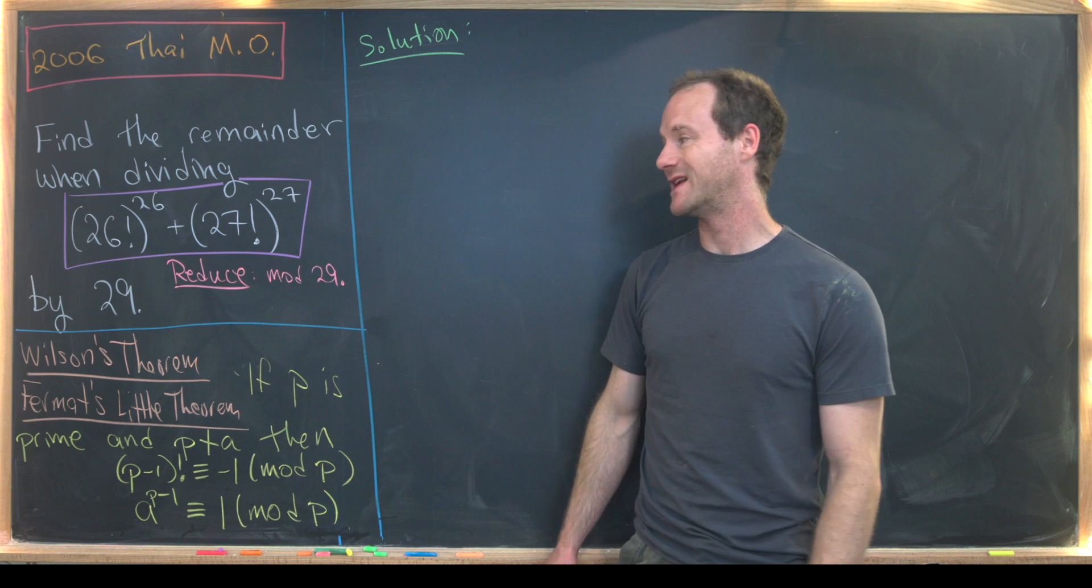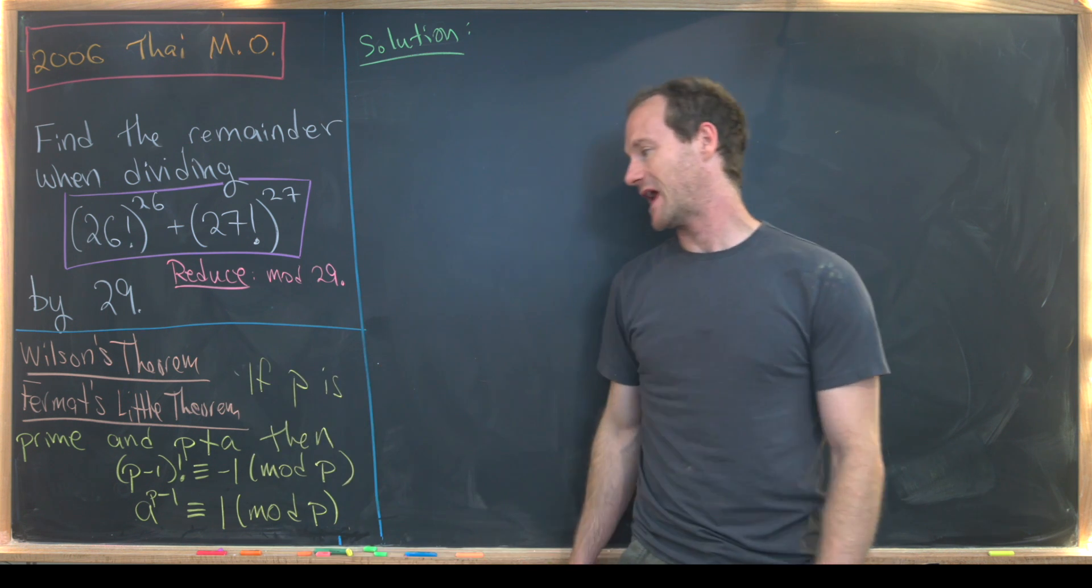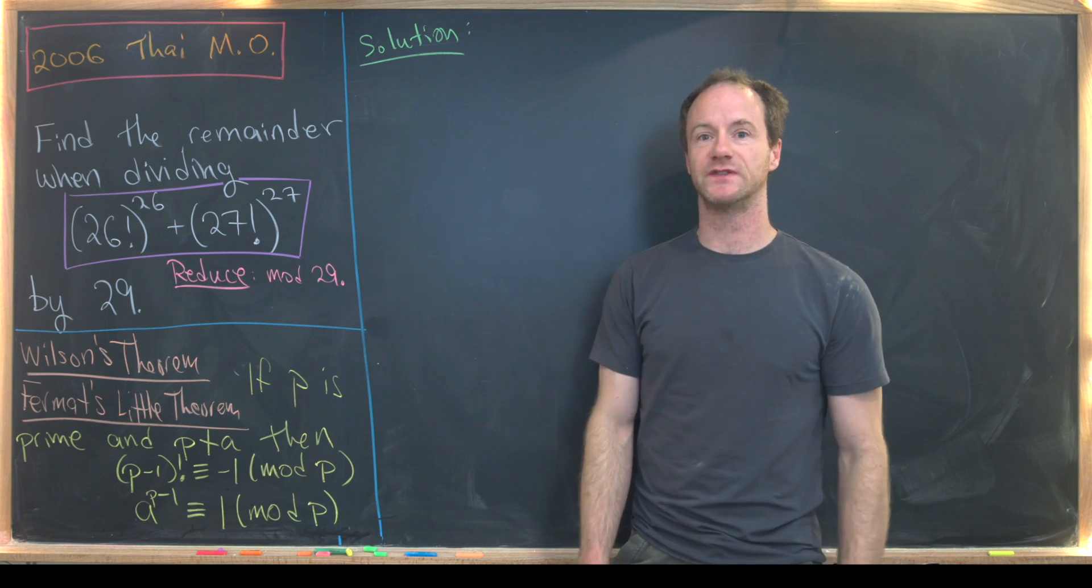So finding a remainder when dividing by 29 is the same thing as reducing mod 29. And we're lucky in that 29 is a prime number, so we can use Wilson's theorem and Fermat's little theorem. So let's recall what those say.